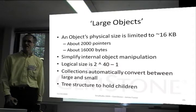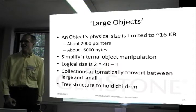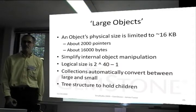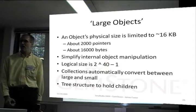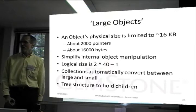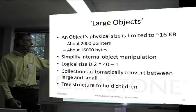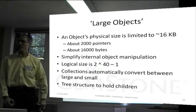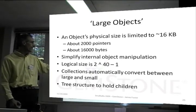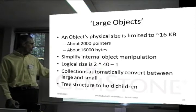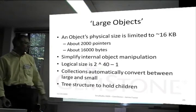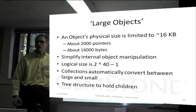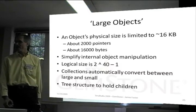You're limited to 2,000, so what we have is something called a large object. Because the object is physically limited to about 16K — 2,400 to 1,600 bytes — we have a large object that can allow 2 to the 40th for its size.